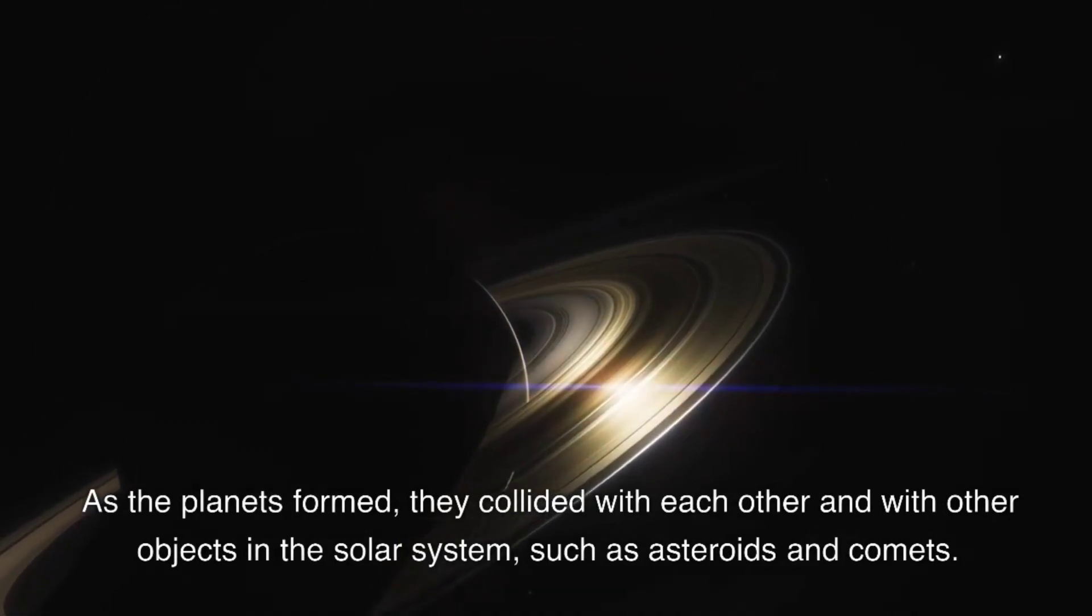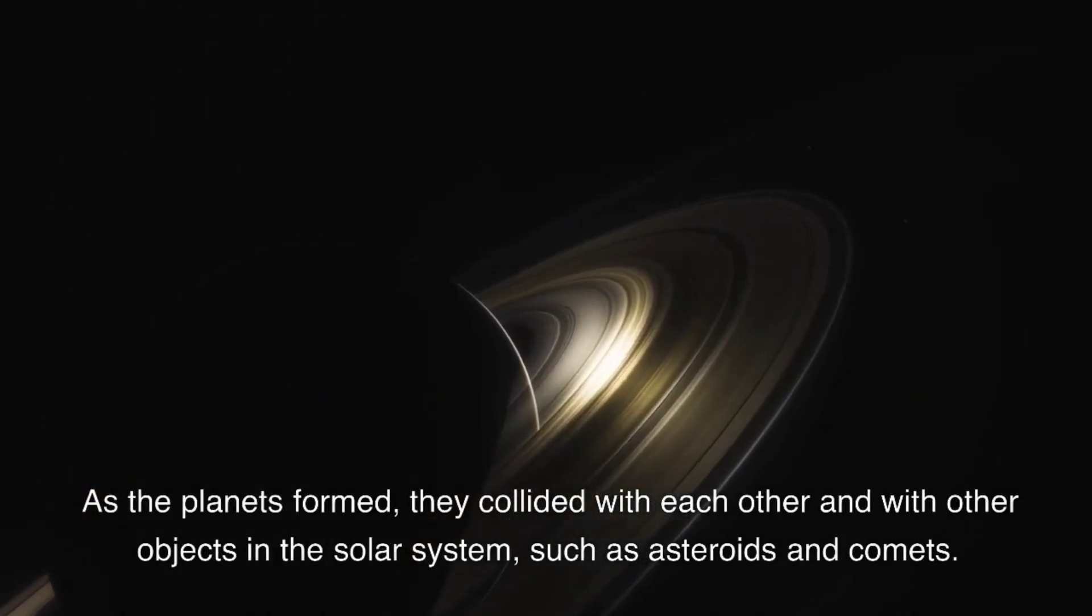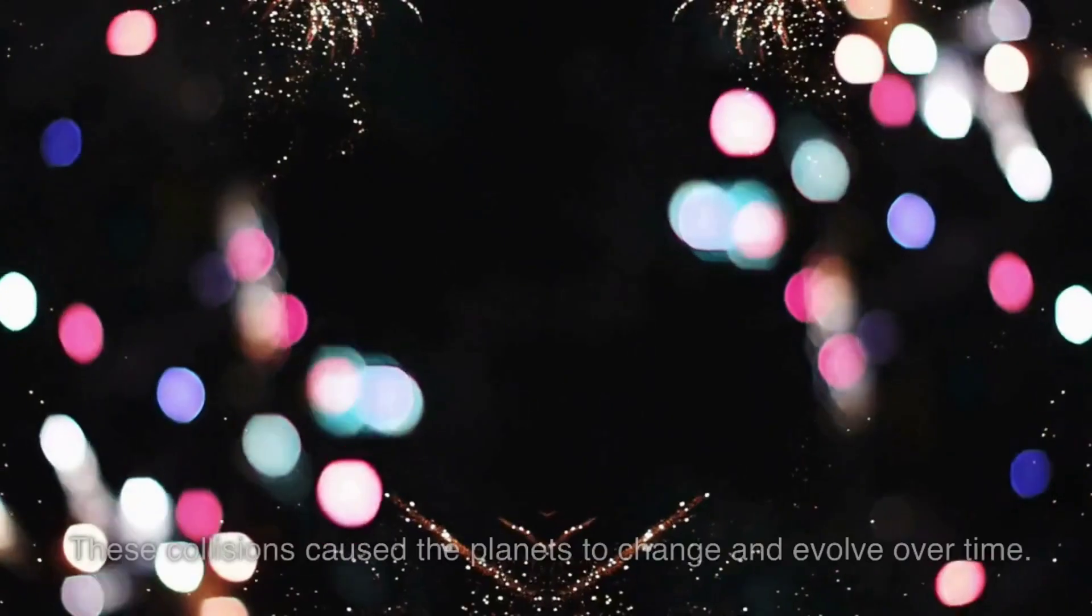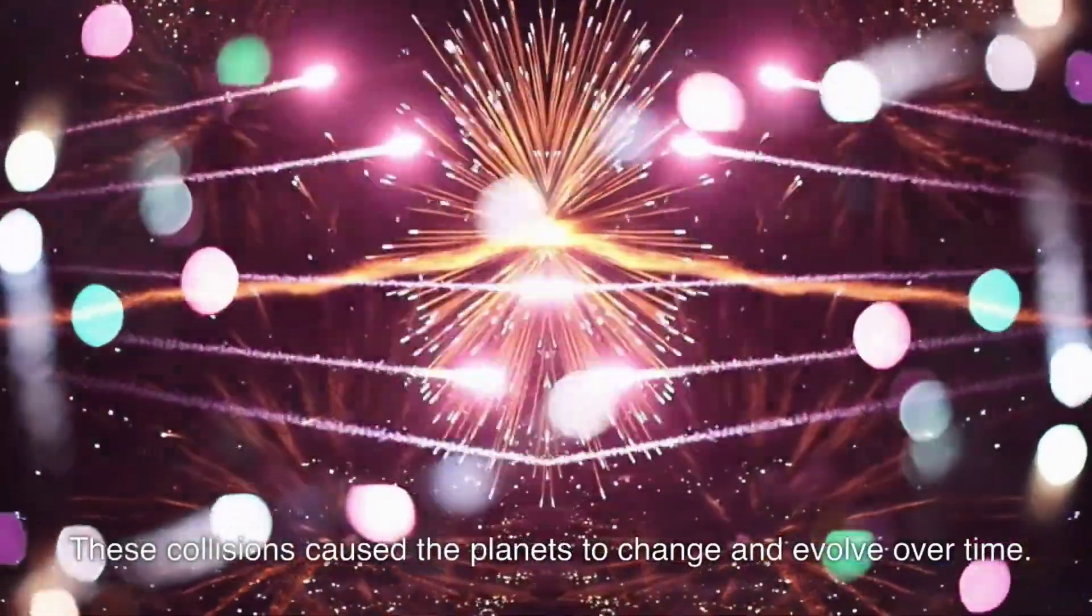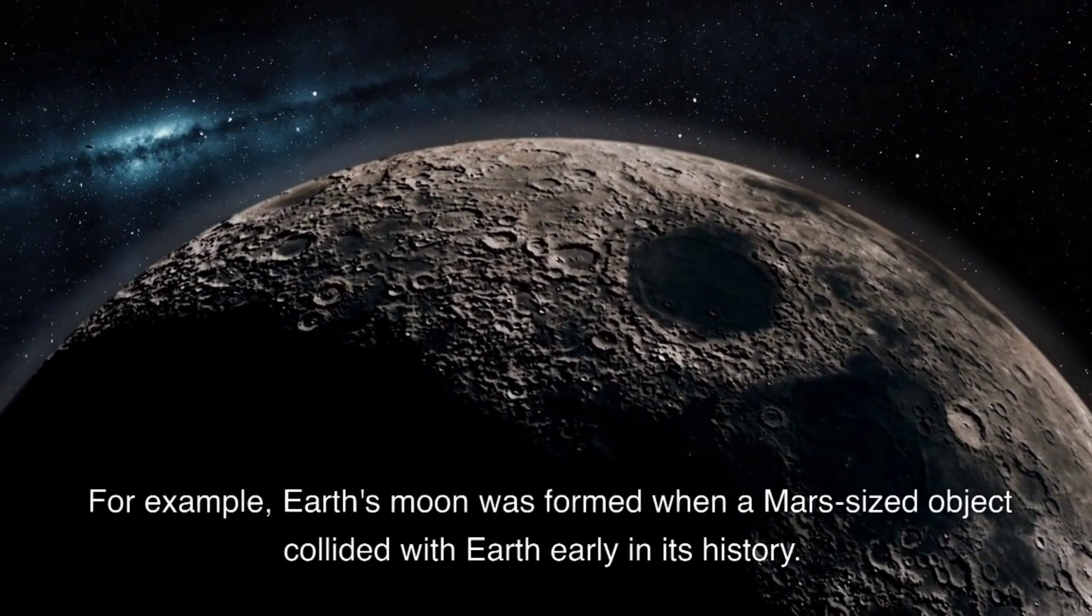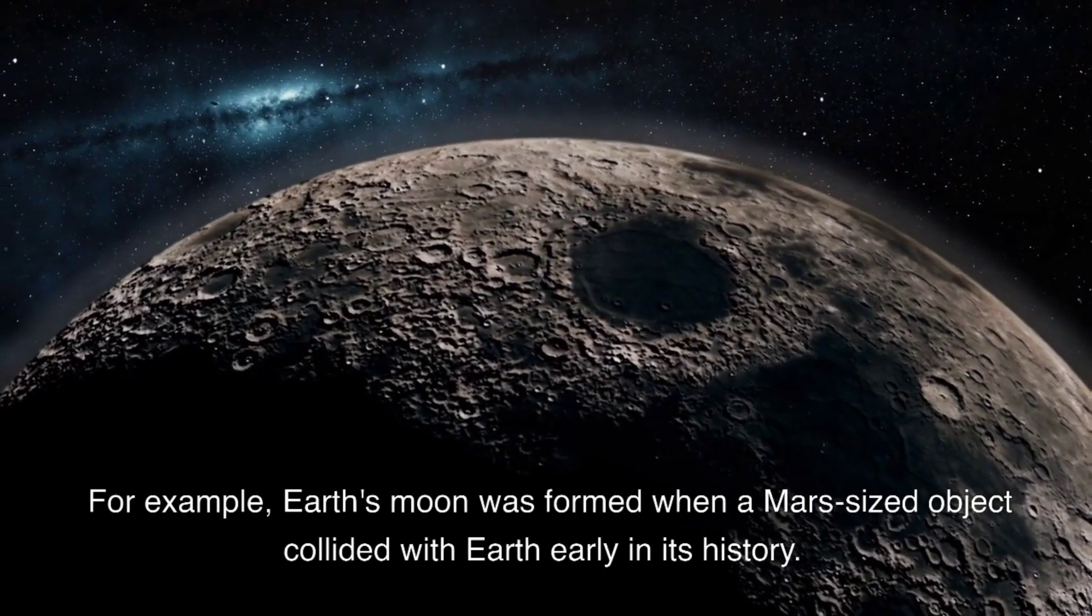As the planets formed, they collided with each other and with other objects in the solar system, such as asteroids and comets. These collisions caused the planets to change and evolve over time. For example, Earth's moon was formed when a Mars-sized object collided with Earth early in its history.